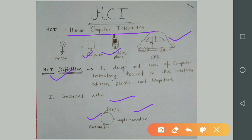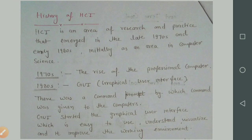So first of all, the history of HCI. HCI is an area of research and practice that emerged in the late 1970s and early 1980s, initially as an area in computer science. In the 1970s, it was used only by professional computers. In 1980s, GUI is there, so GUI is used to understand and visualize and improve the working environment.